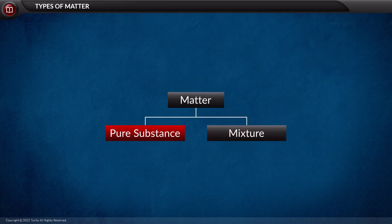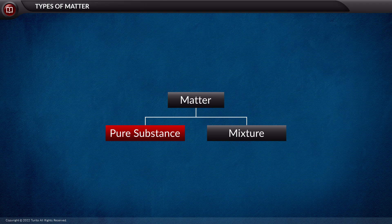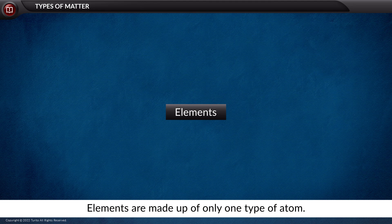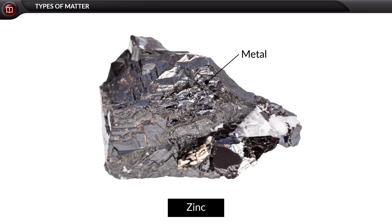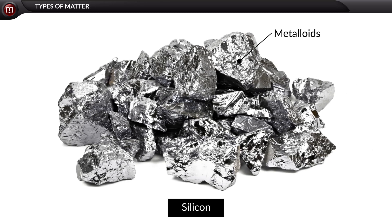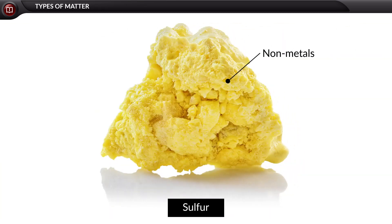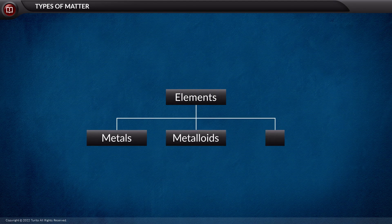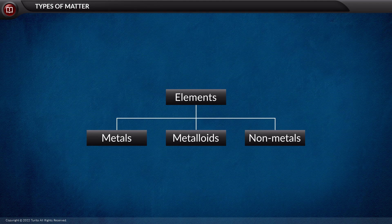So the first one which we must see is the element. Elements are made up of only one type of atom, for example, zinc, silicon, and sulfur. As we already know, elements are further divided into metals, metalloids, and non-metals.